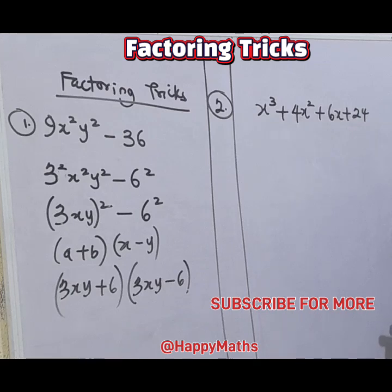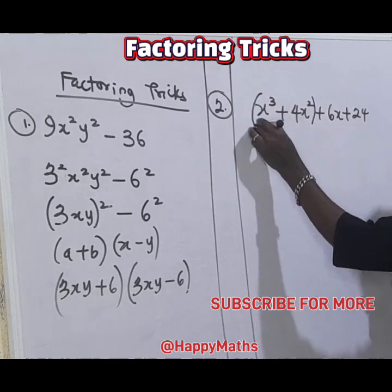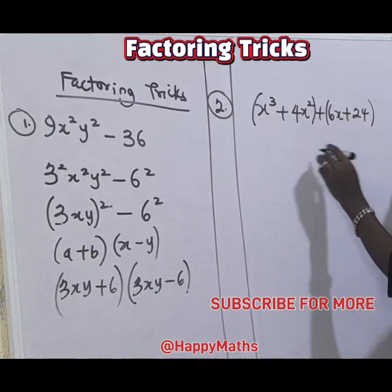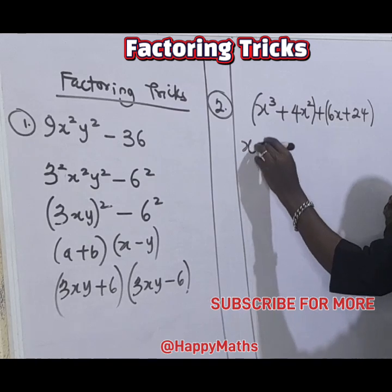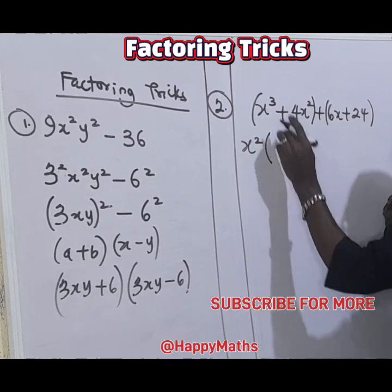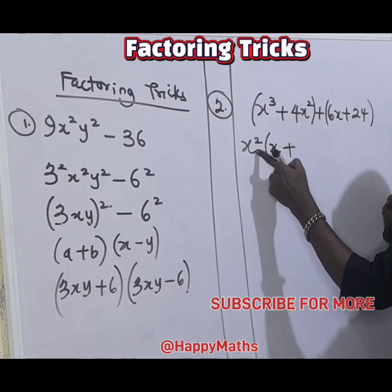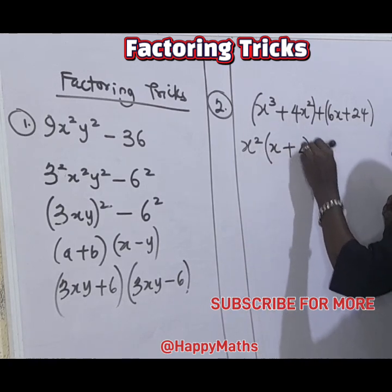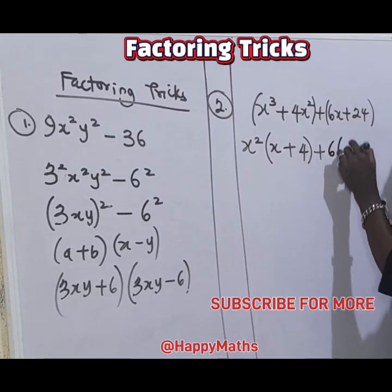Now this is another one that has to do with the polynomial. Let's factorize this. Now, s squared, s cubed — let's factor out the lower. Then s cubed divided by s squared, we get s. Plus, s squared can eliminate, we're left with 4. Plus, 6 can divide with 4. Factor out 6s, divide by 6, we get s.